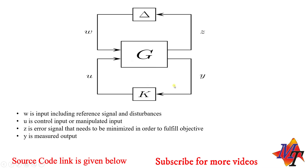There is an extension of H-infinity control which is the mu-synthesis controller. Now we will see how a robust controller scheme looks in a simple feedback form. G is the plant which we have to optimize to reach the desired response, delta represents the uncertainties, and K is the controller. W is a reference signal consisting of reference inputs as well as disturbances coming from the uncertainties, and U is the control input or manipulated input from the controller.